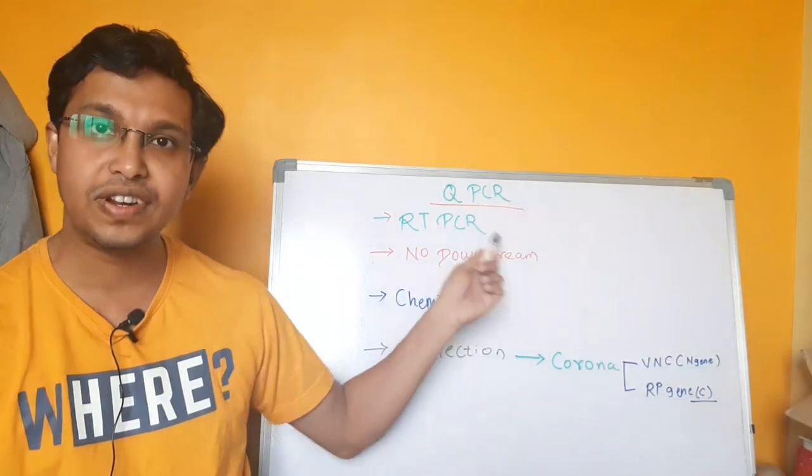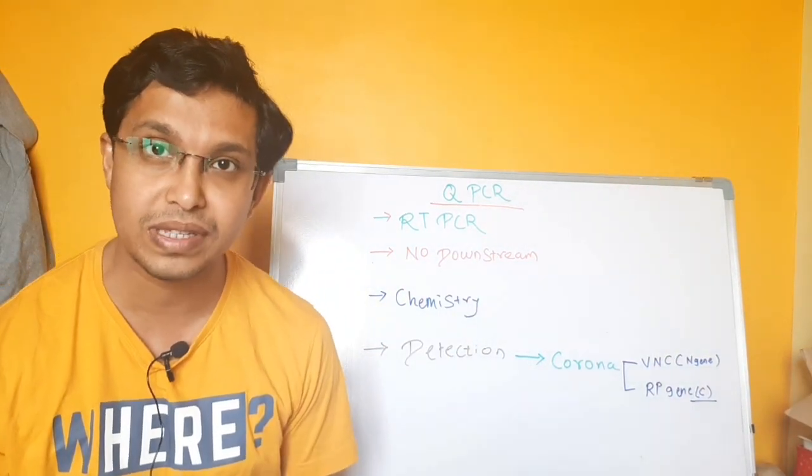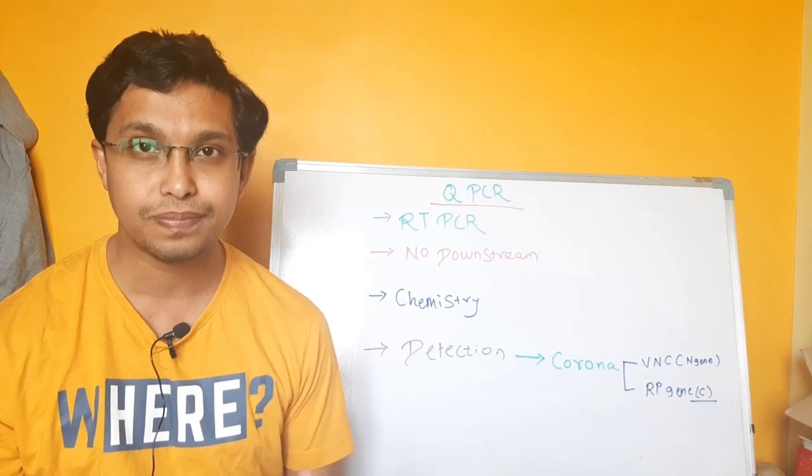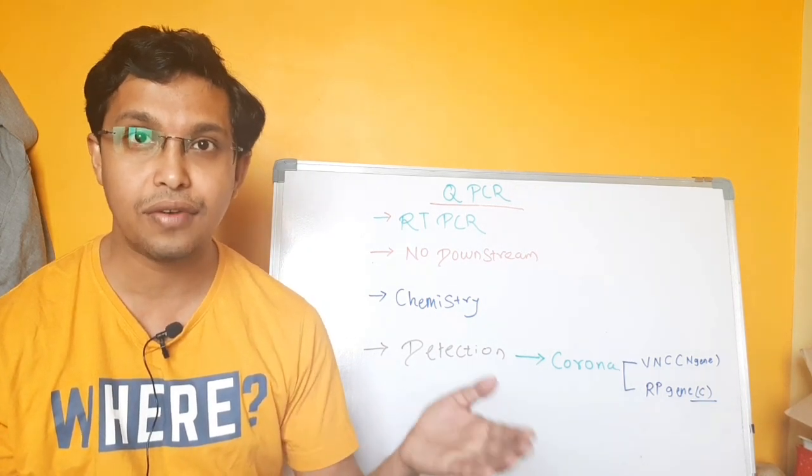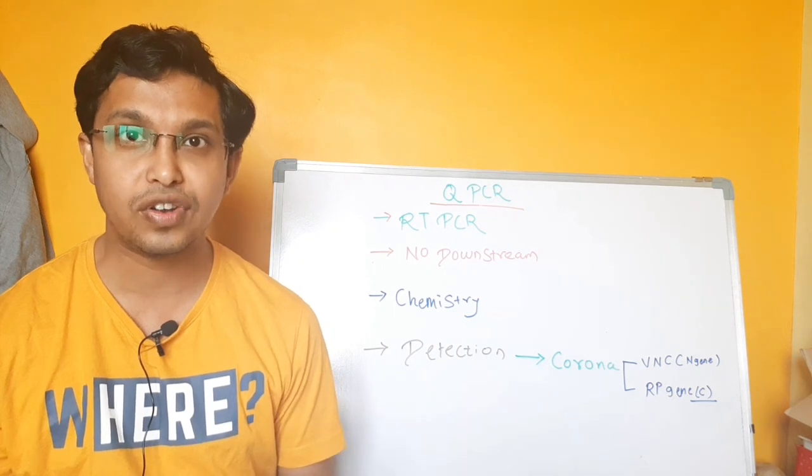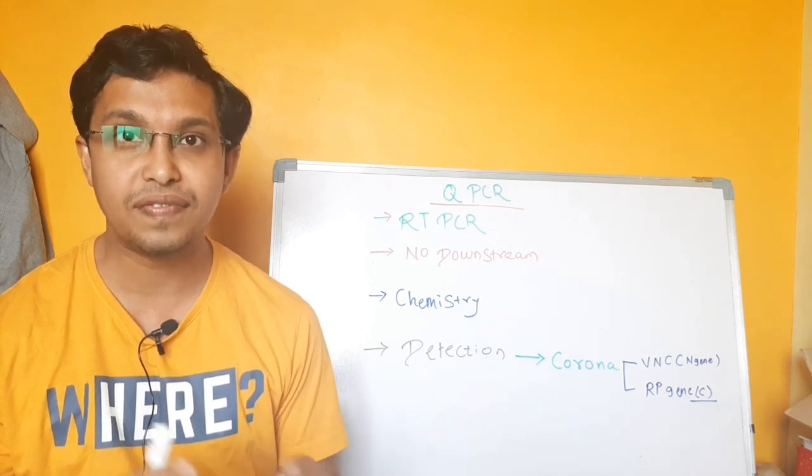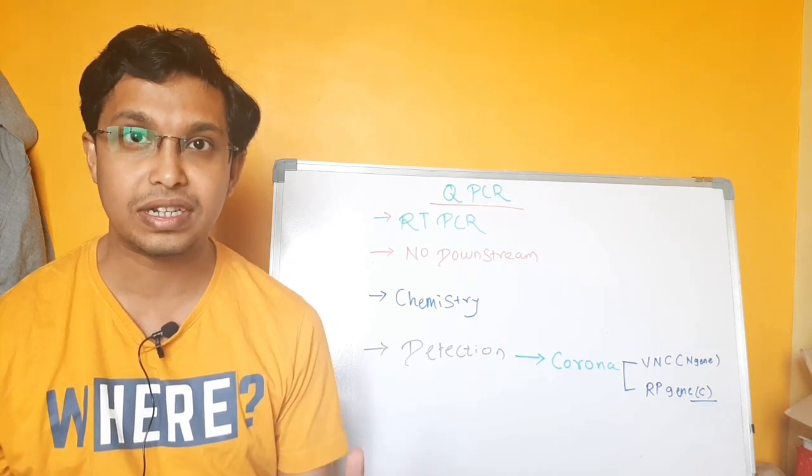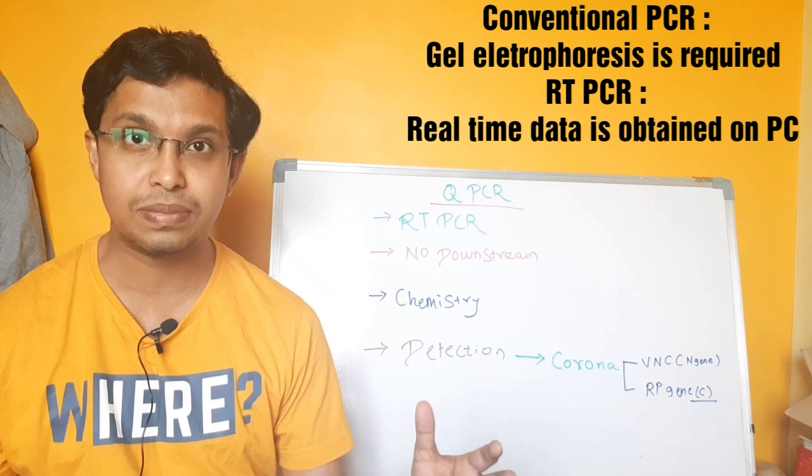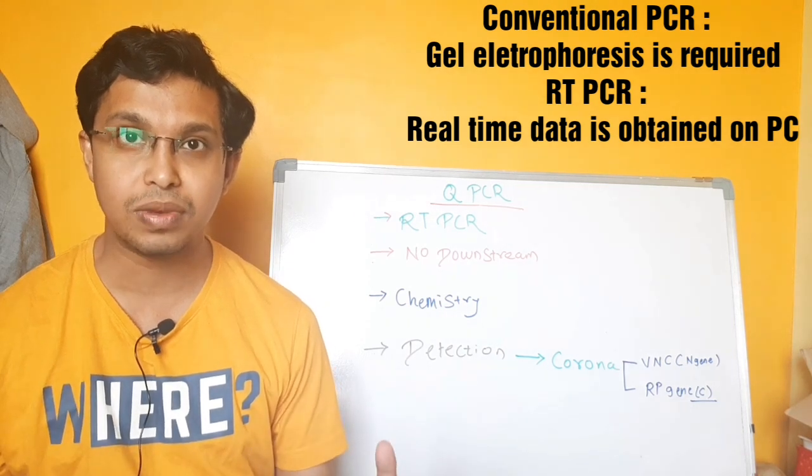Now what is the advantage of real-time PCR over conventional PCR? As we all know that in conventional PCR, once you run the PCR, you have to perform gel electrophoresis and then visualize the gel on UV transilluminator or a gel documentation system. That is a lengthy procedure and it is time-consuming.